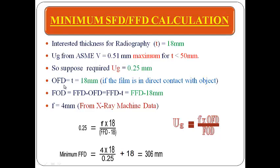OFD equals the thickness of the weld = 18 mm, assuming the film is in direct contact with the object. So FOD = FFD − OFD = FFD − 18 mm. The focal size is 4 mm from the X-ray machine data — this is a supposed value; we assume our X-ray machine focal size is 4 mm.